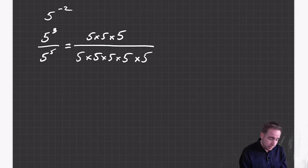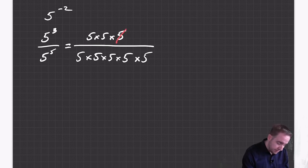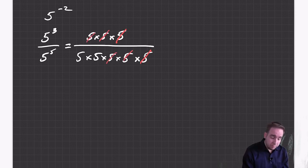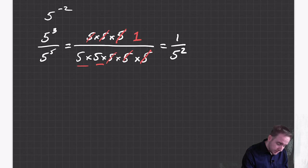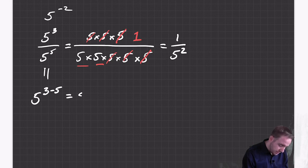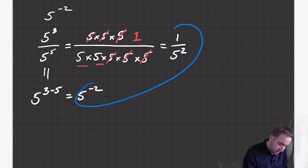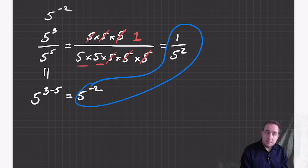This is a fraction. When I have a string of multiplication in a fraction, I can cancel things out — times five and divided by five is the same as not doing anything at all. If you cancel everything out and reduce to lowest terms, you are left with one on top and two fives left on the bottom. So this is equal to one divided by five squared. And by this rule, that has to be five to the power of three minus five, which is five to the negative two. So five to the negative two and one over five squared have to be the same number.